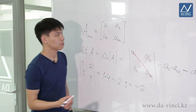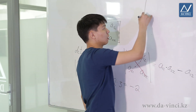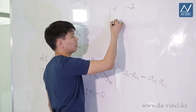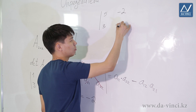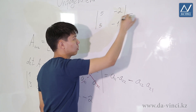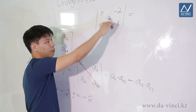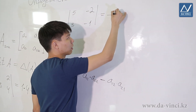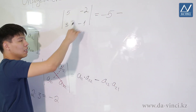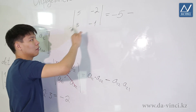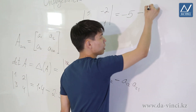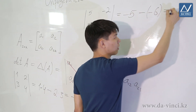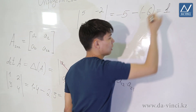Let's consider another example: 5, minus 2, 3, minus 1. Multiply the elements on the main diagonal: 5 by minus 1, that's minus 5. Subtract the product of the elements on the secondary diagonal: 2 by minus 3 is minus 6. That is, we subtract minus 6. Minus 5 minus minus 6 is equal to 1.